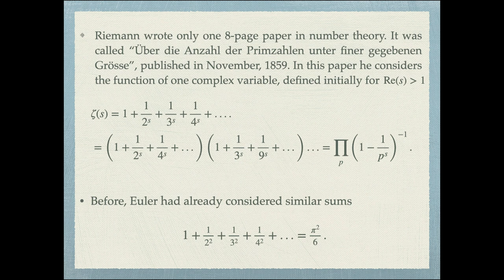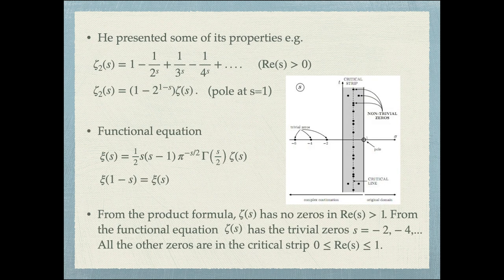This function called zeta of s is just the sum of inverse powers: one plus one over two to the s, plus one over three to the s, plus one over four to the s. You start with s being a complex variable with real part bigger than one to make this sum well-defined and absolutely convergent. By using the fundamental theorem of arithmetic, you can factor: the sum over all integers factors as the powers of two times the powers of three times the powers of five and so on. Each of these sums over prime powers is a geometric progression, so you can evaluate the sum. You get the product formula for the Riemann zeta function on the right of one.